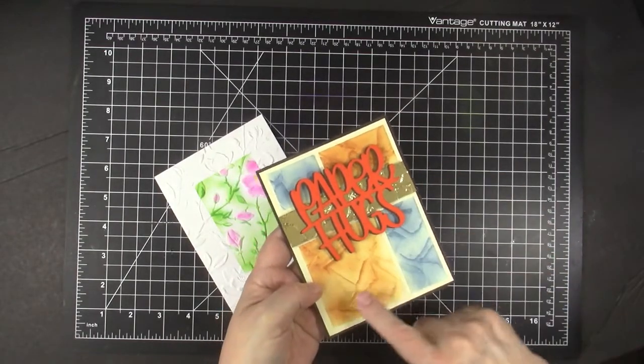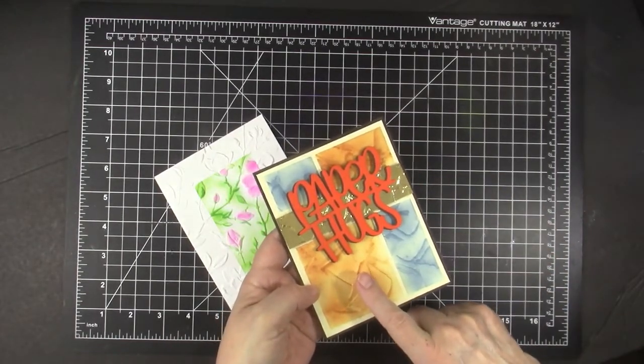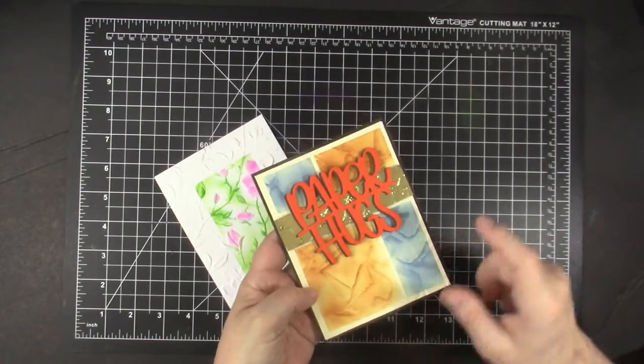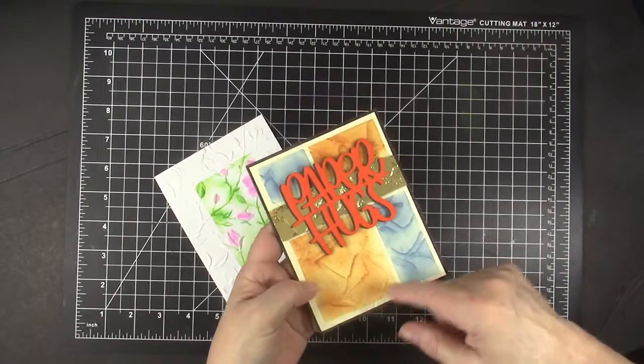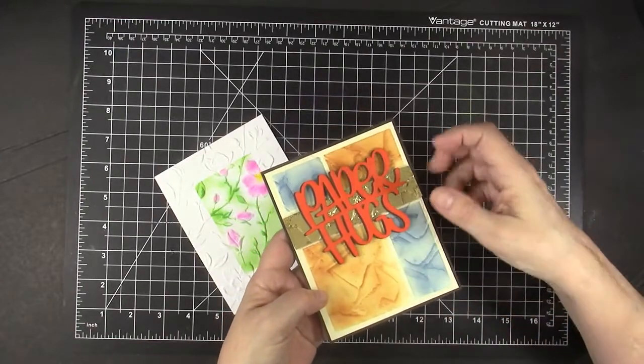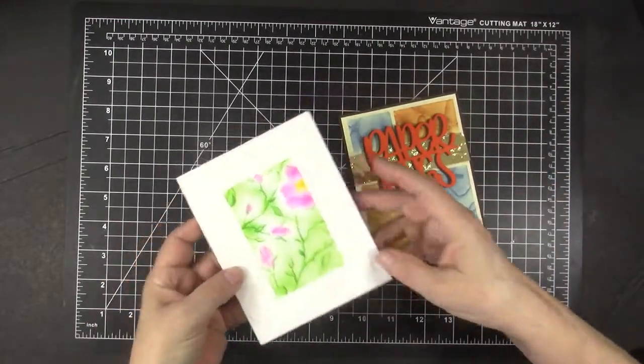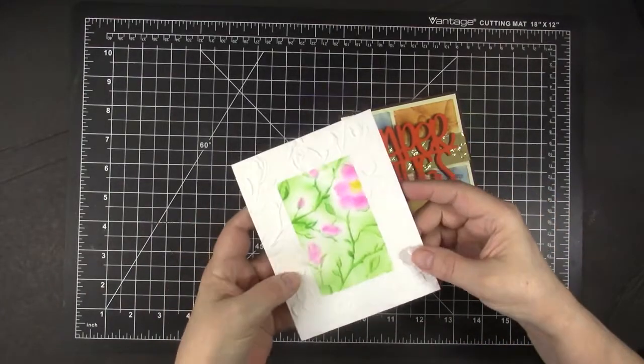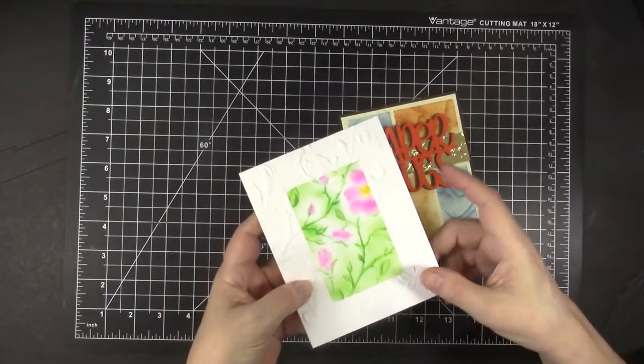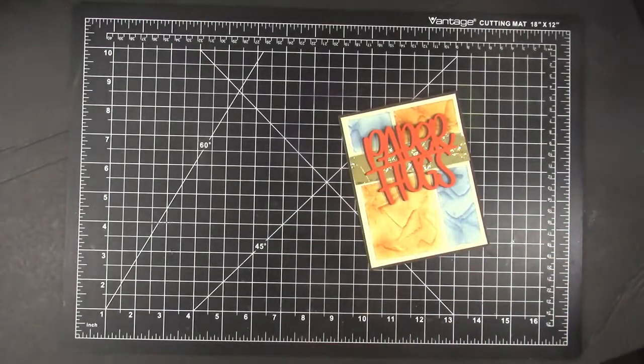The first card is another new 3D embossing folder from Stampin' Up. I'm going to show you how I got this effect on that card. And then I'm also going to show you step by step how I made this card. I just love how both of these cards turned out so I'm going to share both of them with you.